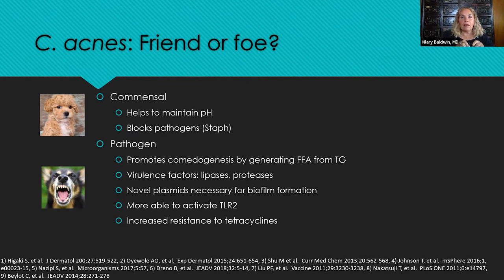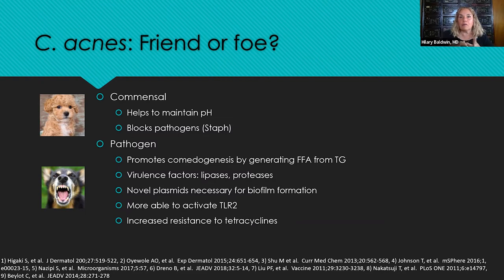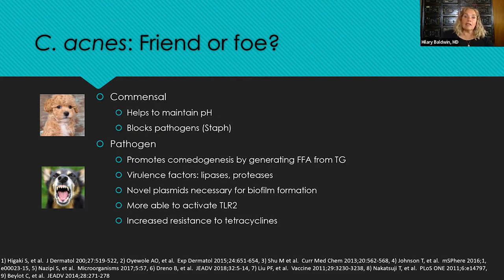A biofilm is a protective coating surrounding the bacteria. The immune system has a very hard time finding bacteria inside this biofilm, and antibiotics have a hard time getting through it to do their job. These pathogenic strains produce this biofilm to hide from both the immune system and from antibiotics. These more pathogenic C. acnes strains are also more able to activate toll-like receptor 2 and even show increased resistance to the tetracyclines.